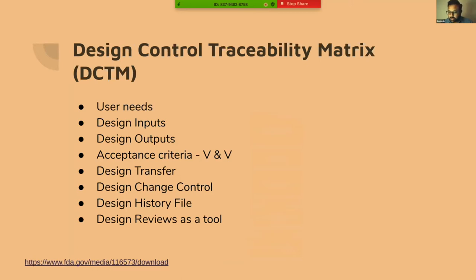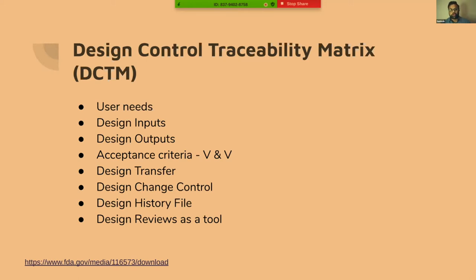A lot was discussed about how we need to have a traceability matrix and risk placed into all of this — starting from user needs, to how we define specifications for design inputs and design outputs, back into how we accept something as usable, up to the point of transferring into production controls. Then followed by the design change process — how do we process changes and make sure every change is accounted for. All of this is stored as a design history file, and we're going to talk about design reviews as a tool.